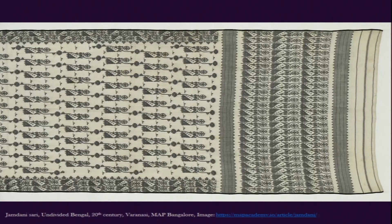The term 'Jamdani' has Persian origins. It sometimes means 'flower vase,' and some have argued whether 'jam' came from 'jama' while 'dhani' means a container — though that interpretation seems less convincing. However, 'Jamdani' as 'flower vase' has significance since many of these motifs are flowering or blossoming across the entire fabric.